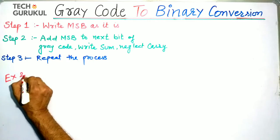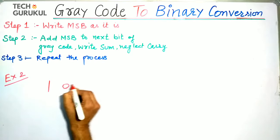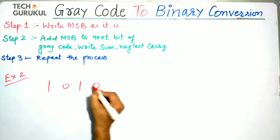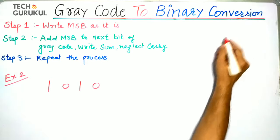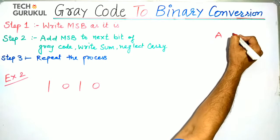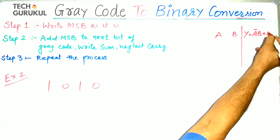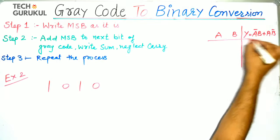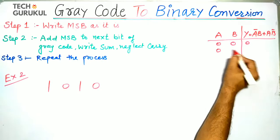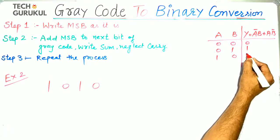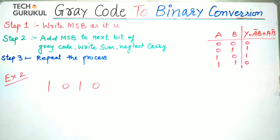In Example 2, we are given gray code 1, 0, 1, 0, and we will perform XOR operation. For XOR: input 0, 0 — output is 0; input 0, 1 — output is 1; input 1, 0 — output is 1; input 1, 1 — output is 0. This is the XOR operation.